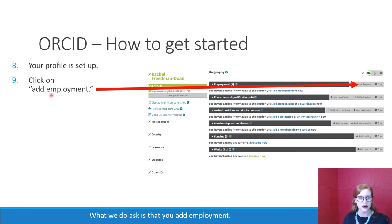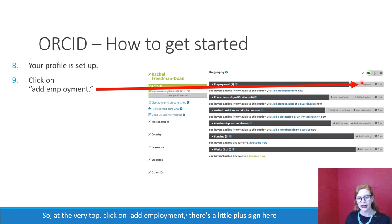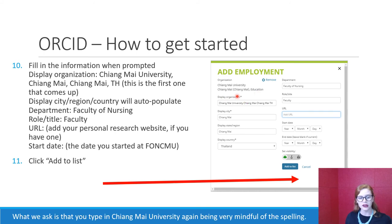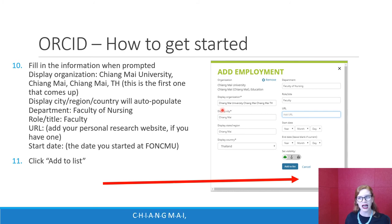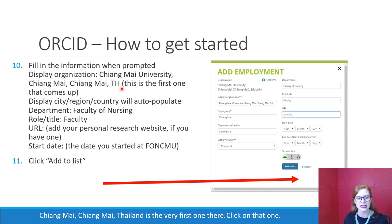Your profile is basically set up at this point. What we do ask is that you add employment so we can clearly see that you are affiliated with Chiang Mai University Faculty of Nursing. At the very top, click on 'Add employment' — there's a little plus sign. When prompted, fill in the display organization. Type in 'Chiang Mai University,' being very mindful of the spelling: C-H-I-A-N-G M-A-I — two words.